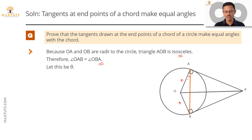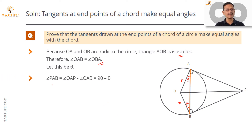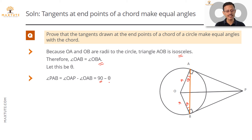Since OA equals OB, angles OAB and OBA are equal — call them theta. Mark this in the diagram. Now, angle PAB is the angle made by the tangent with chord AB. It equals angle OAP minus angle OAB, which is 90 minus theta.